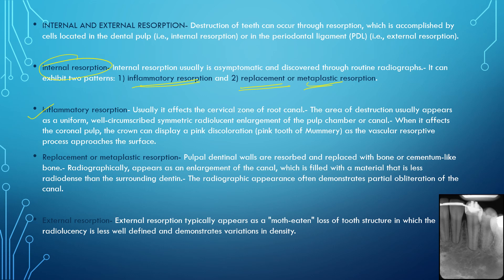Inflammatory resorption is also called the pink tooth of Mummery, as shown in the question. It usually affects the cervical part or cervical zone of the root canal. The area of destruction appears as a uniform, well-circumscribed, symmetric radiolucent enlargement of the pulp chamber or canal. Clinically it appears as a pink discoloration due to the vascular resorption that occurs on the surface.